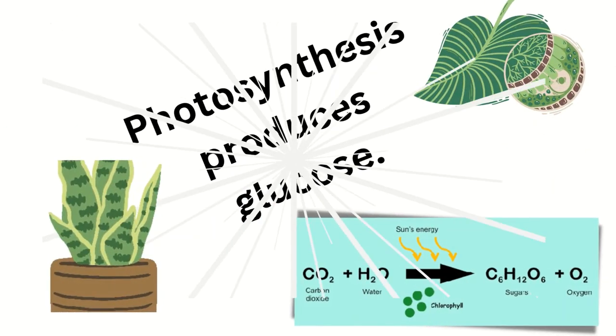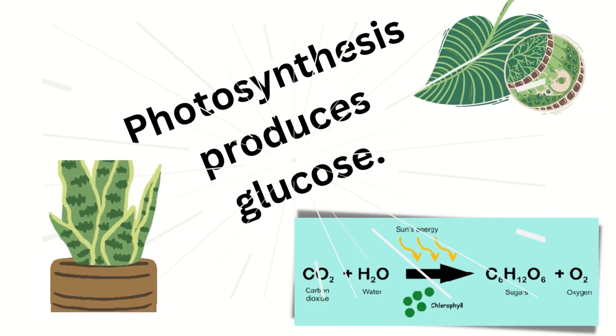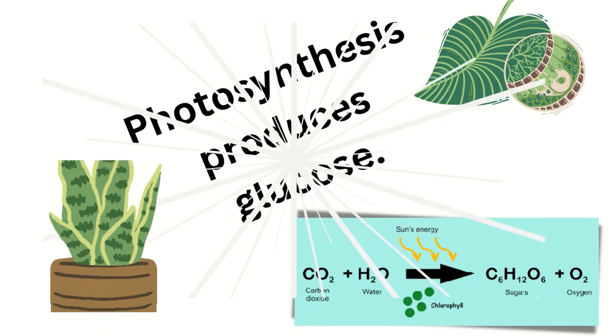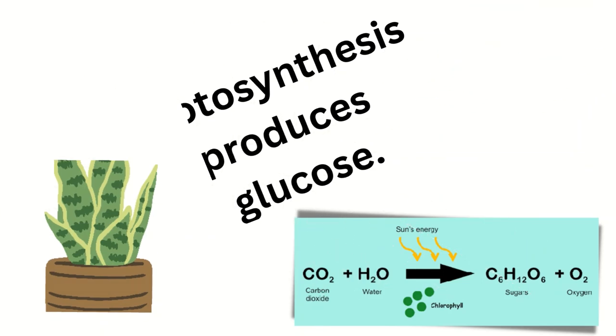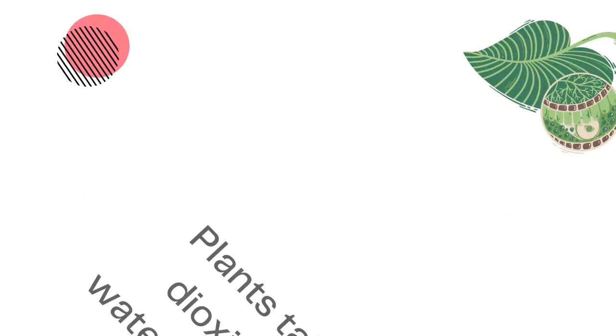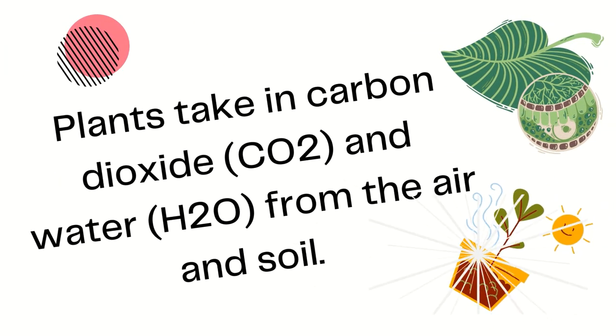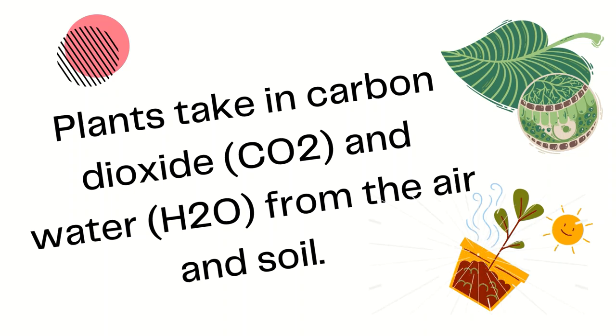Photosynthesis produces glucose. Plants take in carbon dioxide, CO2, and water, H2O, from the air and soil.